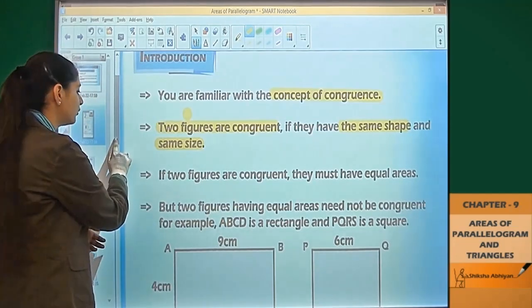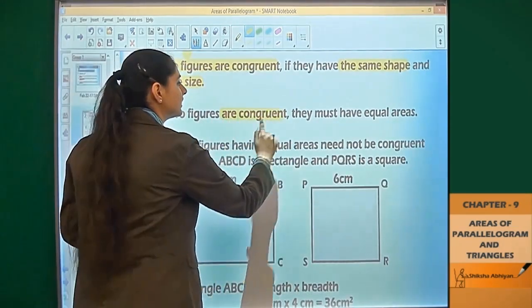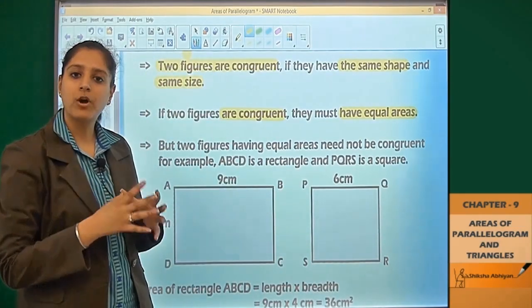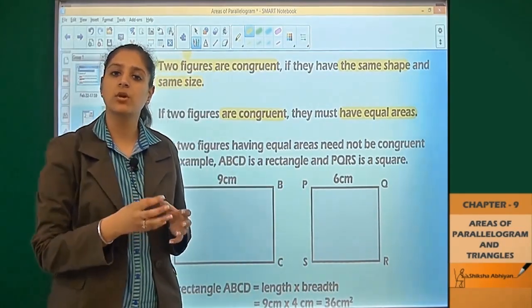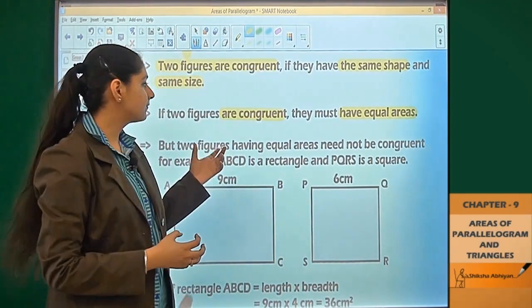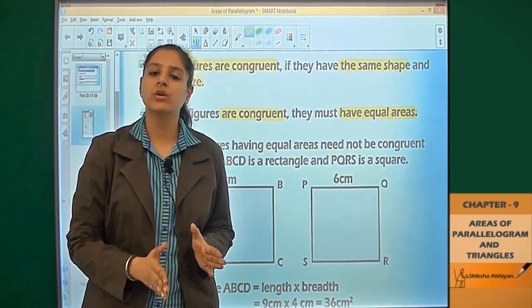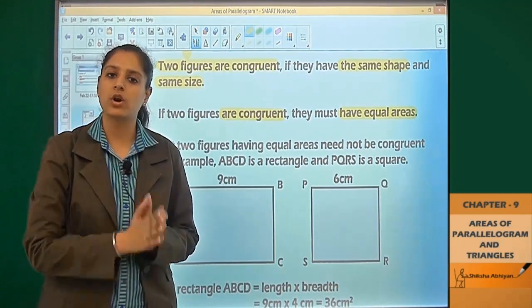If two figures are congruent, they must have equal areas. This is a property, a condition which must be fulfilled.